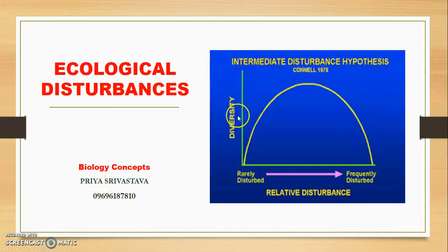As you can see in this graph, on x-axis there is a relative disturbance, on y-axis this is the diversity. So this is the bell-shaped graph.